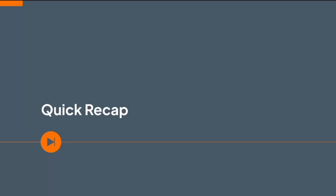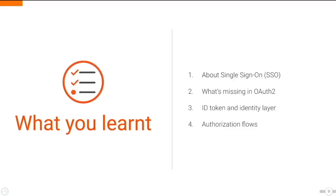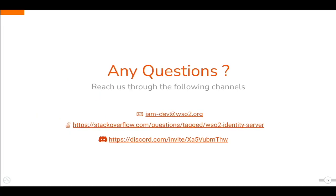We have now come to the end of this training video. Let's recap: first, we got a brief introduction to SSO; next, we discussed why we cannot solely use OAuth2 for authentication; then, we learned about the ID token and the identity layer introduced in the OIDC protocol; finally, we got an overview of the OIDC protocol and related specifications. If you have any questions or need further clarification, feel free to get in touch with us through the following channels.